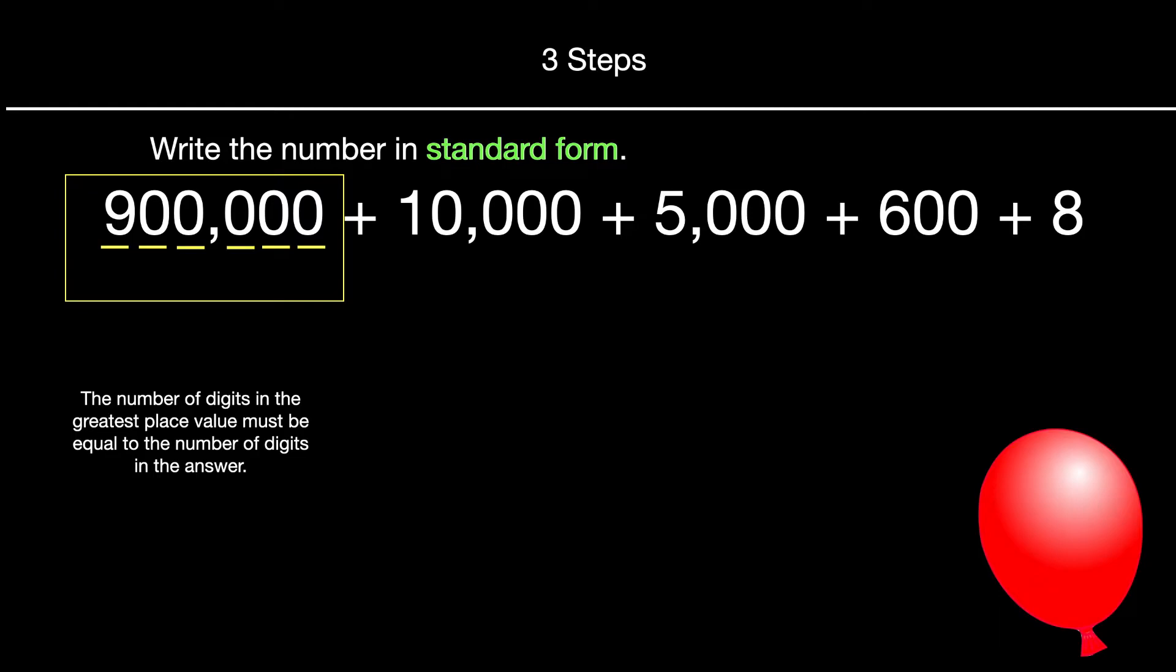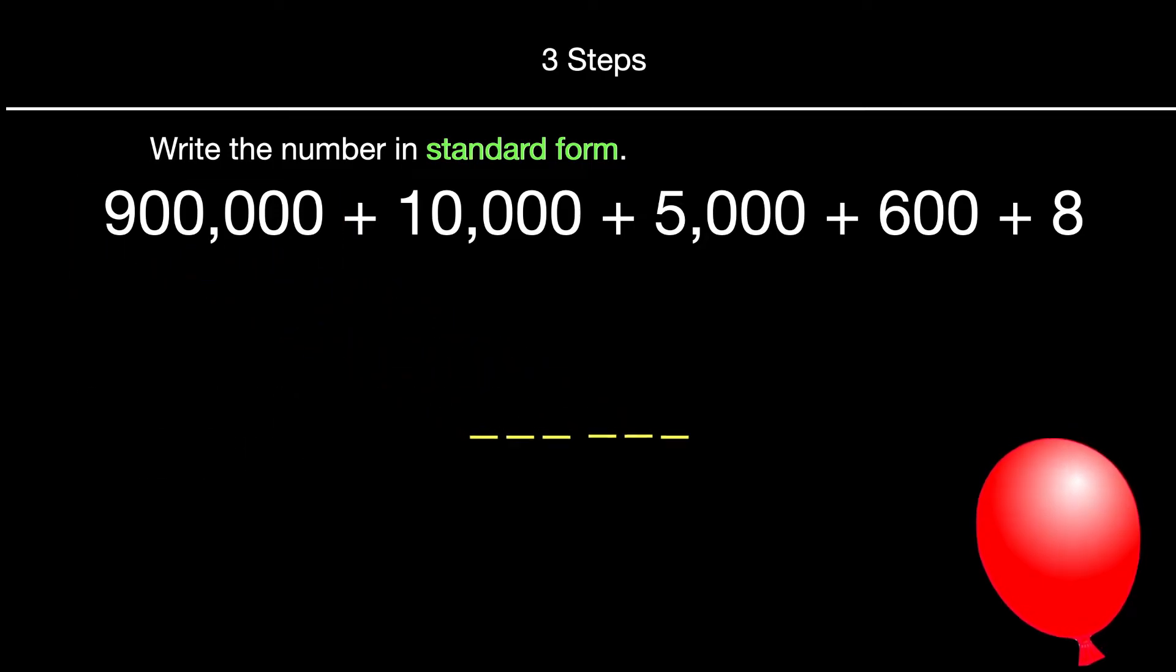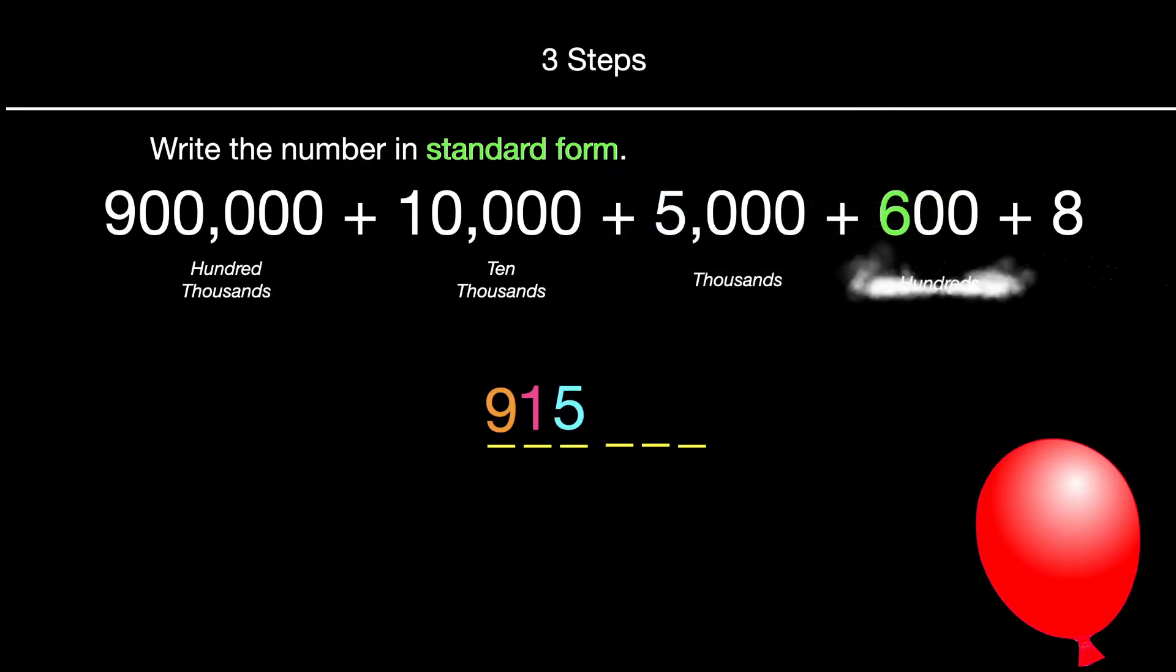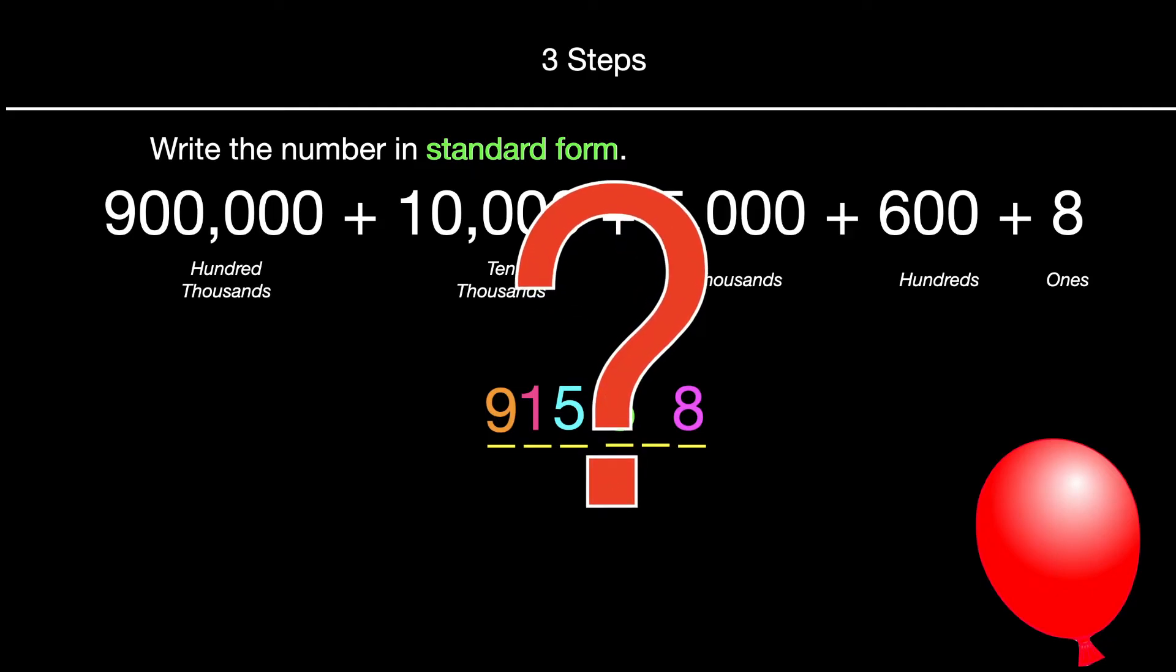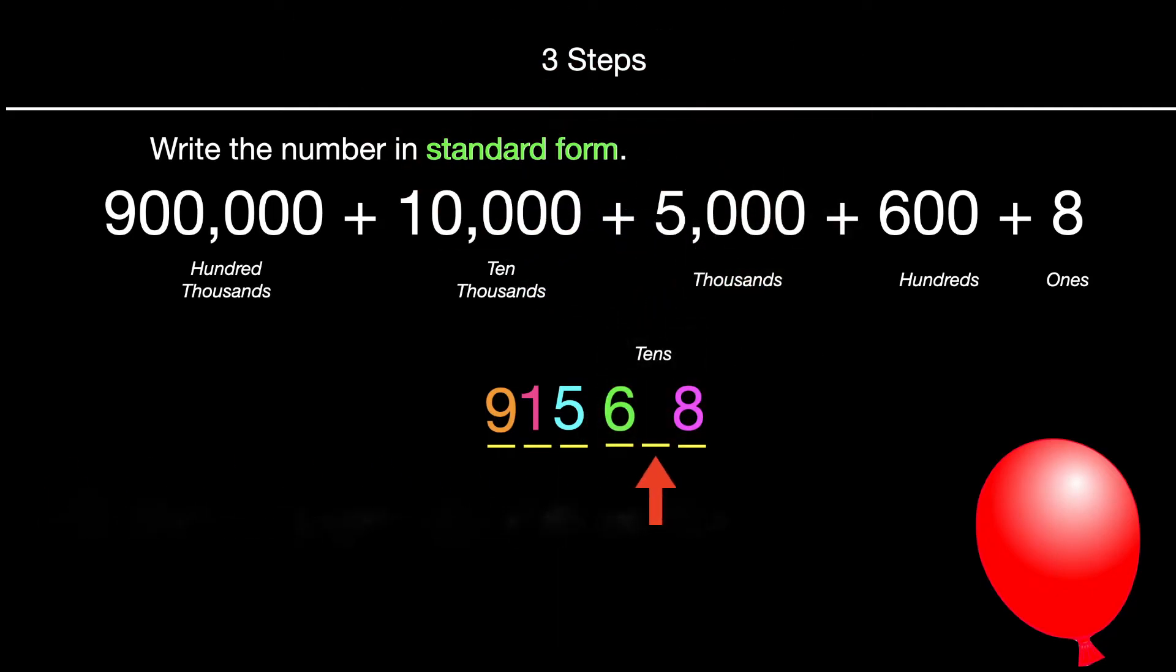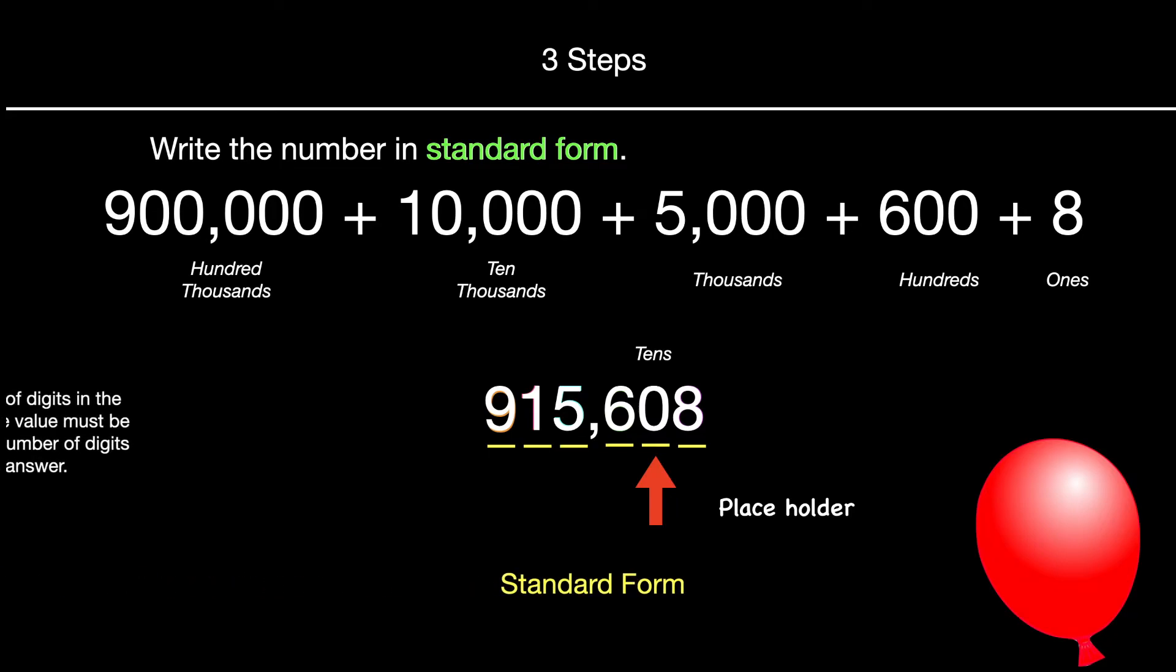So it's a really good idea to count the number of digits in your first number and then put them for your answer. That way your answer, you know, must have six digits. So the nine, we take the nine from hundred thousands, the one from the ten thousands, the five from the thousands, six from the hundreds, and eight from the ones. Notice something doesn't look right. We are missing our tens. So we need to put in a zero there. That's called a placeholder. And then when we put in our comma, our answer is 915,608. And that's in standard form this time.